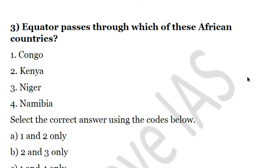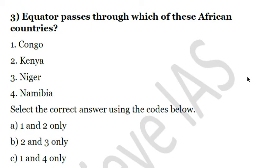Third question: the equator passes through which of these African countries? Congo, Kenya, Niger, Namibia. Out of these options, the equator passes only through Congo and Kenya, so the answer is A — one and two only. In Africa, approximately six or seven countries lie on the equator: Gabon, Congo, Democratic Republic of Congo, Uganda, Kenya, and Somalia. In total, there are 12 countries in the world through which the equator passes.